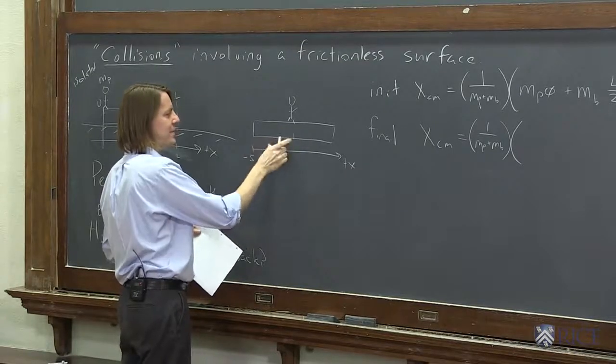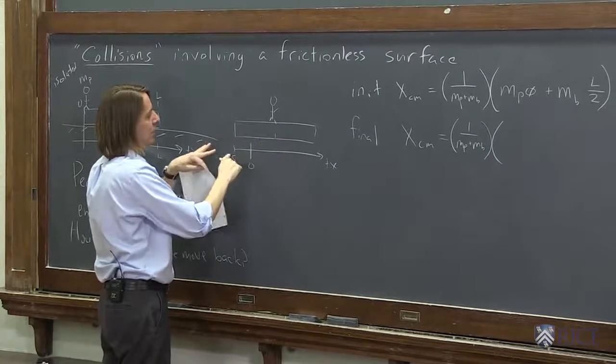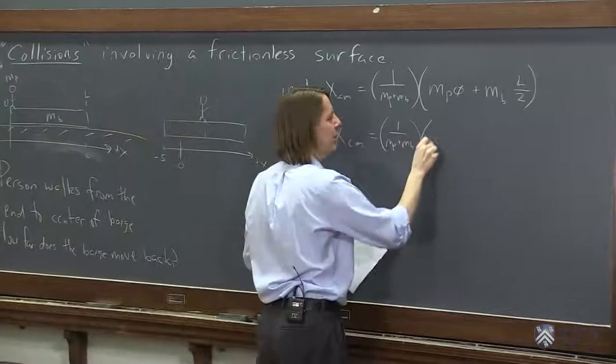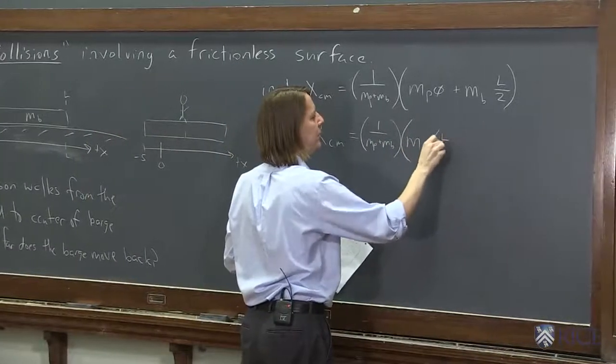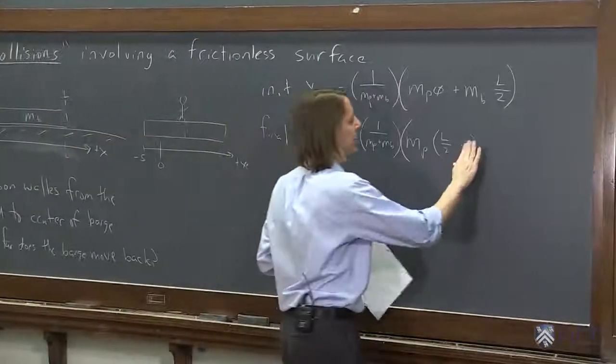all right? This distance is l over 2, but I'm not at l over 2, I'm at l over 2 minus s, because it moved back. So it's mass of the person times l over 2 minus s. That's how far I got.